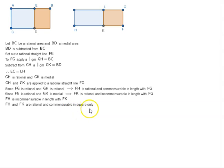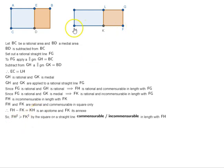FH and FK are rational and commensurable in square only. Therefore, FH minus FK which is equal to KH is an apotome and FK is its annex. So FH square is greater than FK square by the square on a straight line, either commensurable or incommensurable in length with FH.